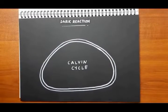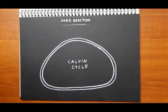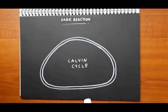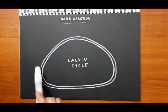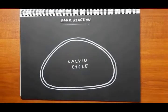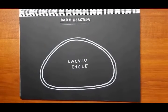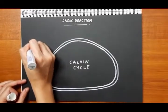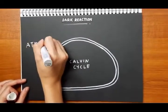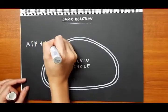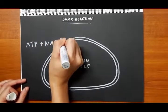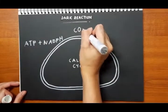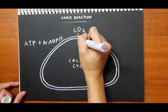For your information, the dark reaction happens in the stroma, which is also located in the chloroplast. Do you remember the products from the light reaction? The ATP and NADPH from the light reaction will continue their role at night.